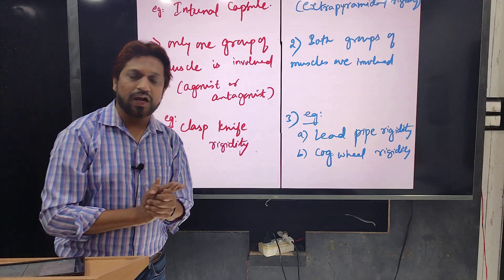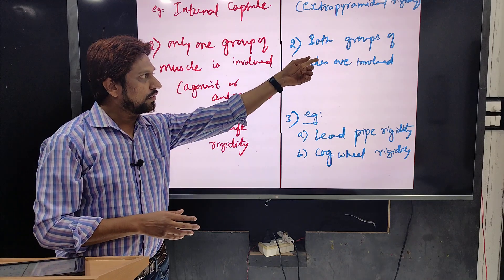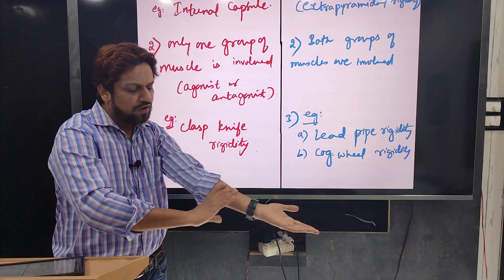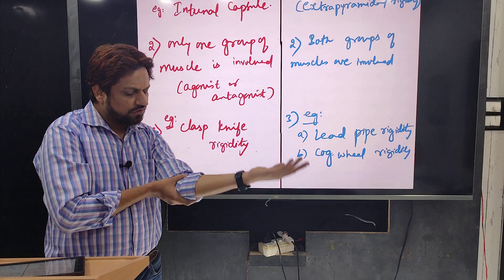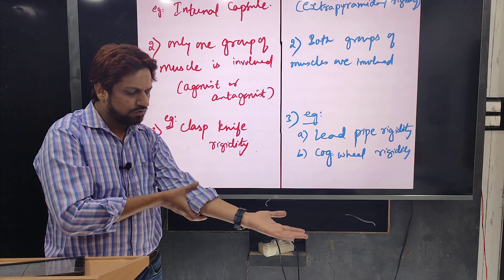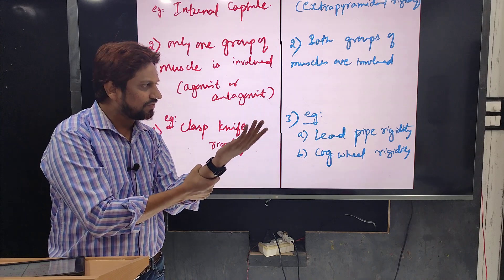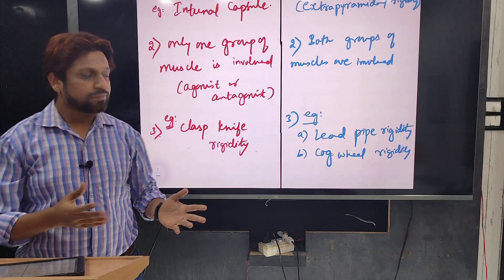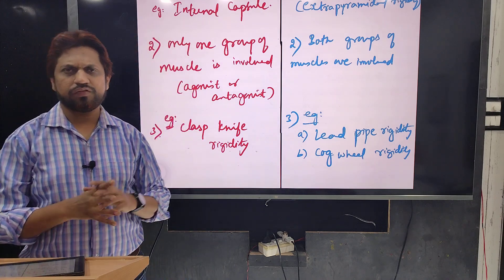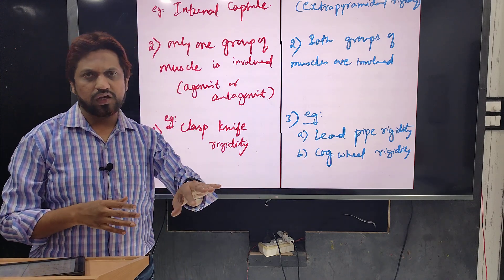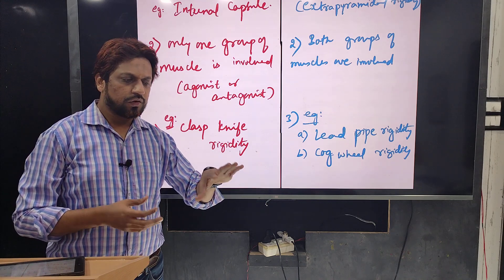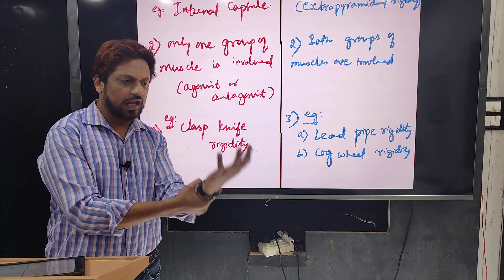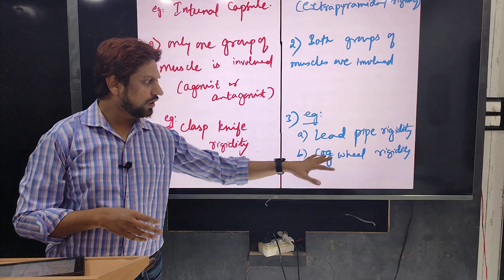In Parkinson's disease or extrapyramidal rigidity, since both groups of muscles — extensors as well as flexors — are affected, the muscles are fully rigid. If you want to passively flex it, you will feel equal resistance throughout, as if you are trying to bend a lead pipe. This is typically called lead pipe rigidity. If lead pipe rigidity is associated with tremors — as in Parkinson's disease — you get cogwheel rigidity. Lead pipe rigidity plus tremors produces cogwheel rigidity.